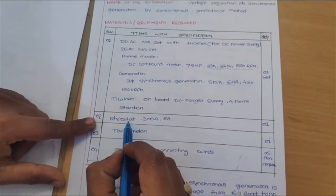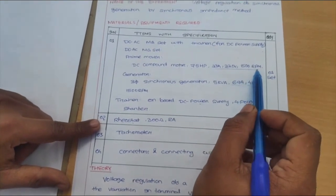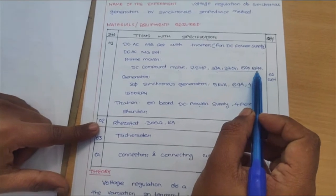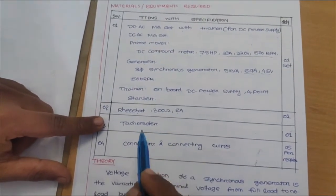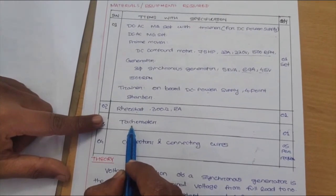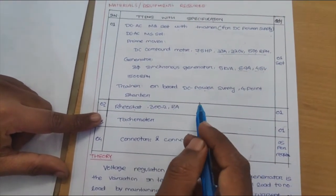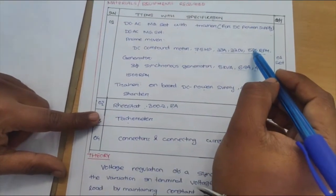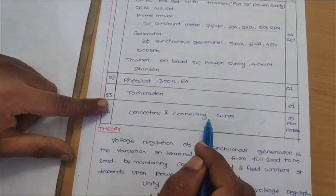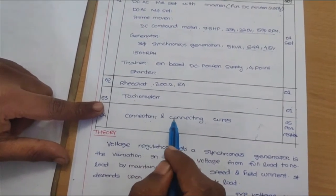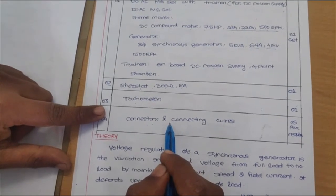Next, we require a rheostat to control the speed of this motor by the flux control method. While doing this practical, you have to maintain the speed constant. A rheostat of 302 ohms is required to change the speed of the prime mover by the flux controlling method. A tachometer is required to measure whether we achieve the rated speed or not. If speed decreases, we need to increase the resistance of the rheostat; if we need to decrease the speed, we decrease the resistance of the rheostat. Connectors and connecting wires are required for short-circuiting the terminals of the synchronous generator while doing the short circuit test and the OC test, and for making the connections.